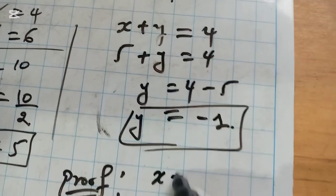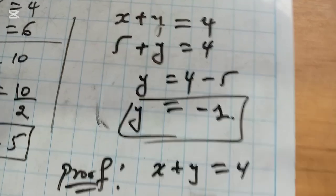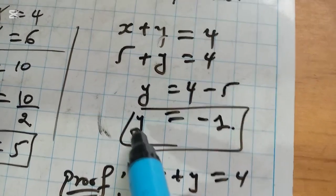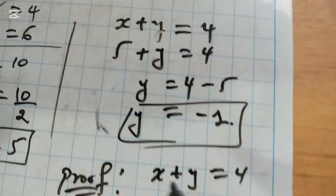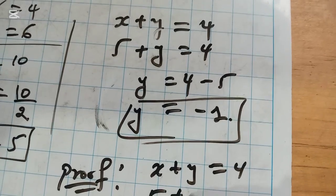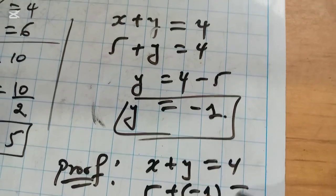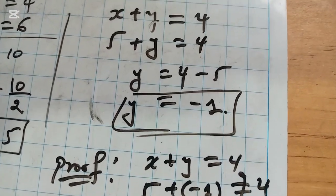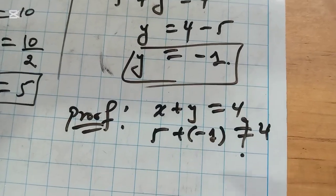For X plus Y equals 4, if you substitute Y by negative 1 and X by 5, you have 5 plus negative 1. This equals 5 minus 1, which equals 4, and it is correct.